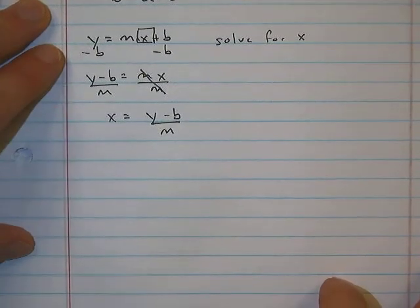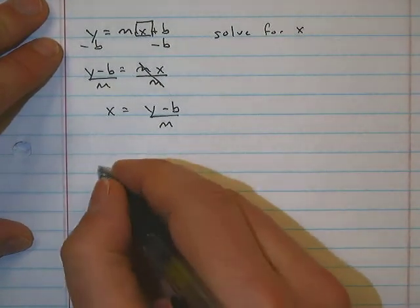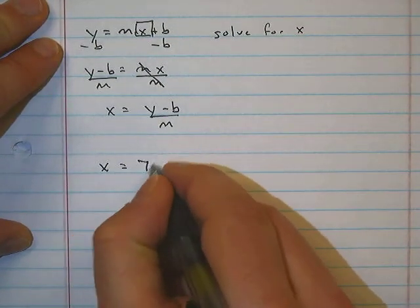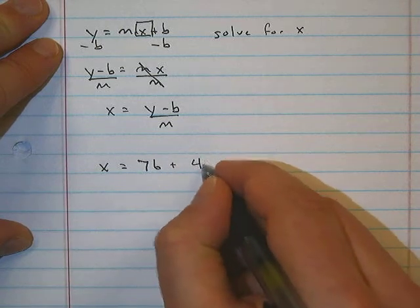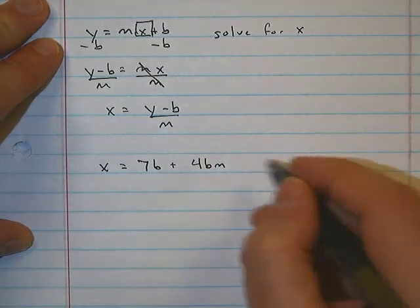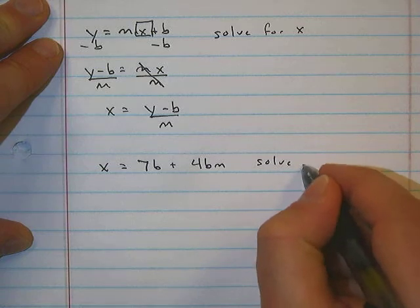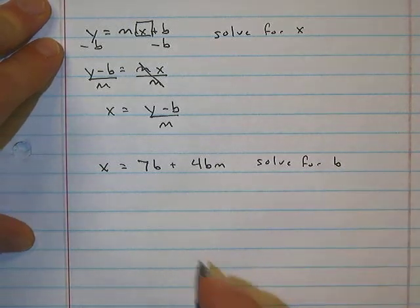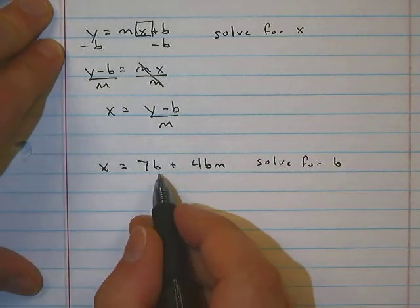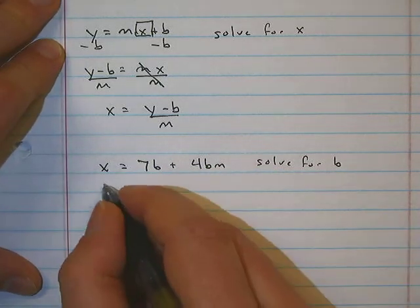That's two steps: subtract b from both sides, divide both sides by m. Let's do a multi-step equation. X equals 7b plus 4bm, and we're solving for b.